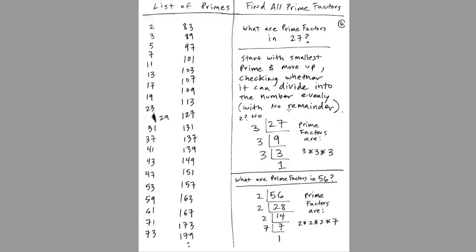Here's what we do: we start with 27 and draw a line. We try to divide 2 into it evenly, but it won't go evenly, so we move to the next prime — 3. 3 goes into 27 evenly; there are exactly 9 threes in 27. Then we ask: does 3 go into 9? Yes — there are 3 threes in 9. Does 3 go into 3? Yes, exactly 1 time. So the prime factors of 27 are 3, 3, and 3.